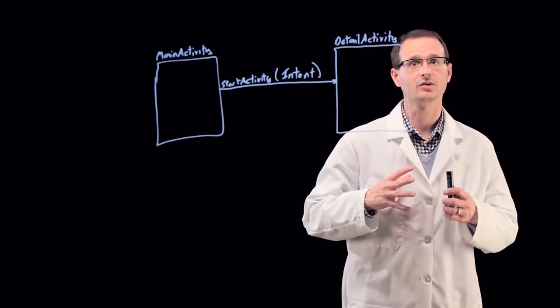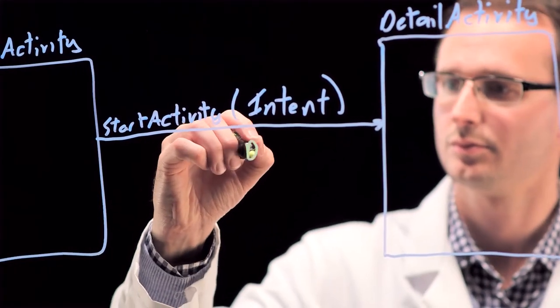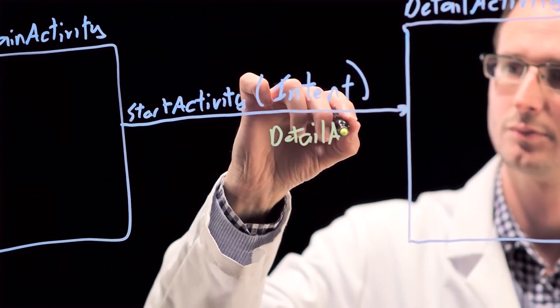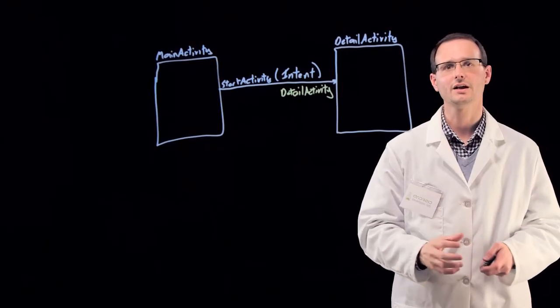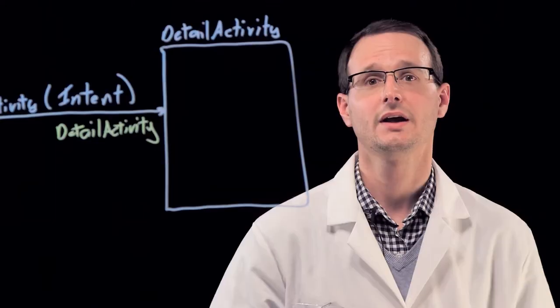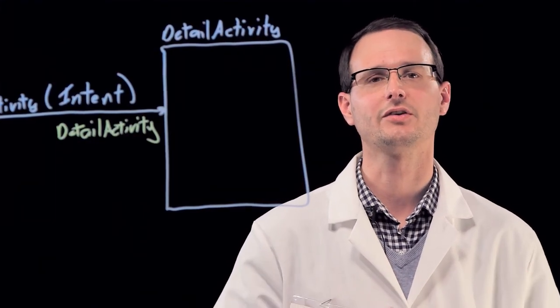Starting activities within your app is the simplest example. With your intent explicitly indicating the target using the context and the class name of the activity. Intents that use the name of the component you're targeting directly are known as explicit intents.